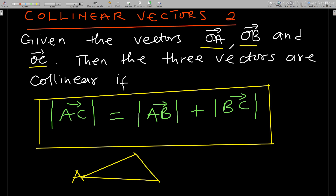So the magnitude of AC — they should form a triangle, let's put it that way. The magnitude of AC should equal the summation of the magnitudes of AB and BC. The magnitude of the whole should equal the summation of the parts.